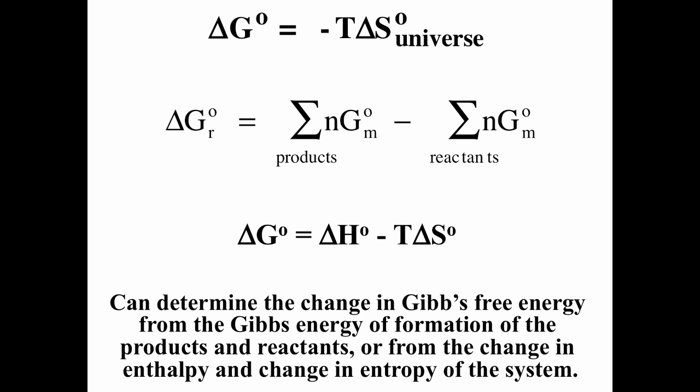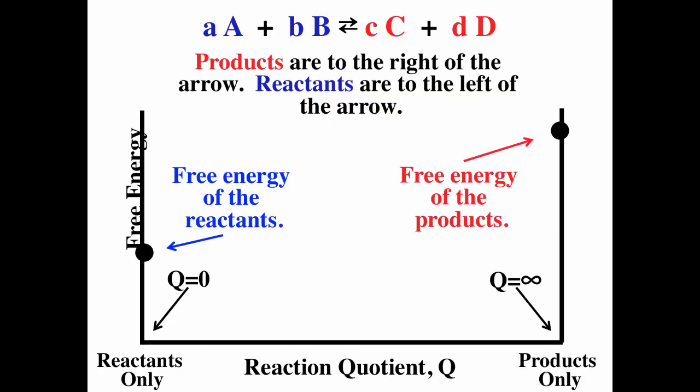We can actually determine Gibbs free energy in three different ways: ΔG = −T·ΔS_universe; ΔG = products minus reactants (since G is a state function); or ΔG = ΔH − T·ΔS. These are three different ways of calculating the same value.